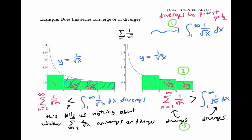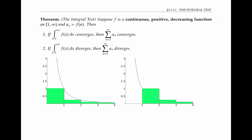This method of comparing a series to an integral is a very general method for showing convergence. It's known as the integral test. The integral test says that if f is a continuous, positive, and decreasing function on the interval from one to infinity, and our terms a sub n are equal to f evaluated at n,